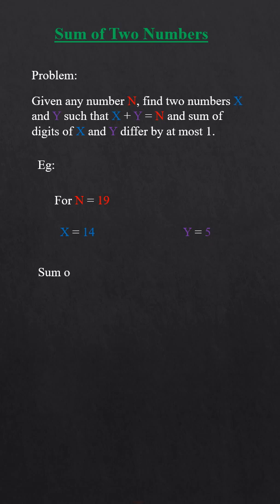For 19, we can take 14 and 5. Sum of digits are 5 and 5, with difference 0.